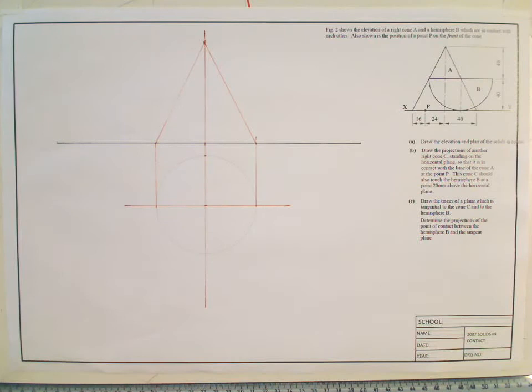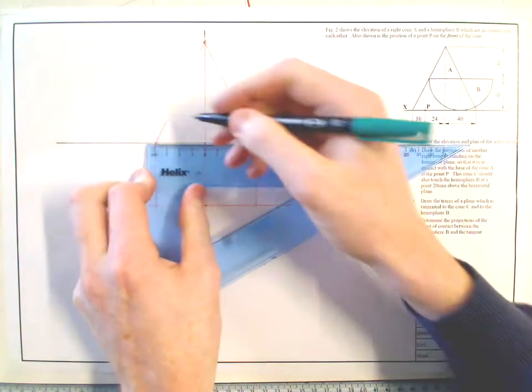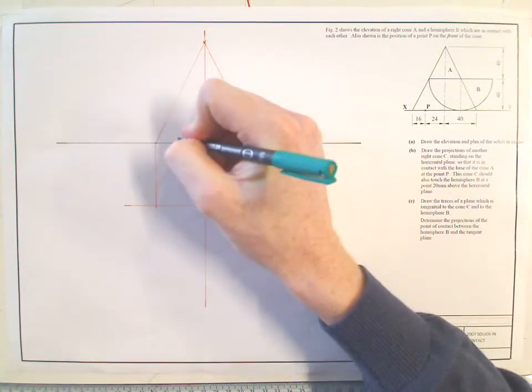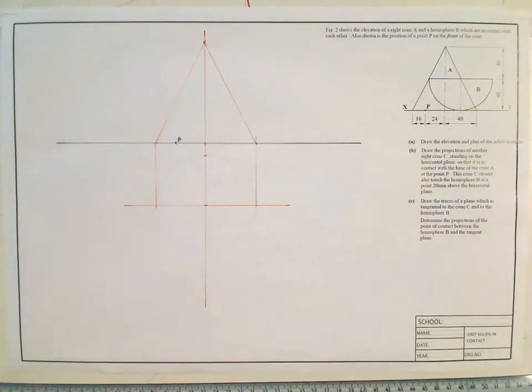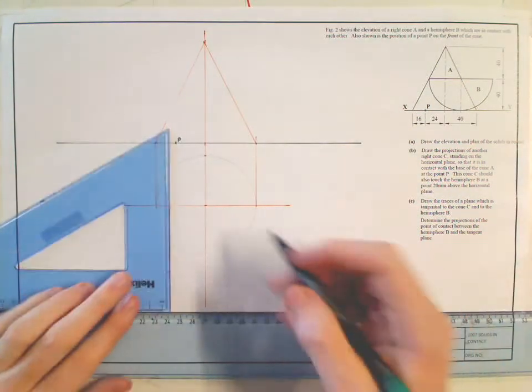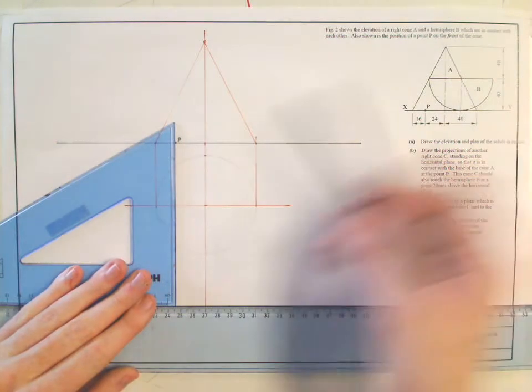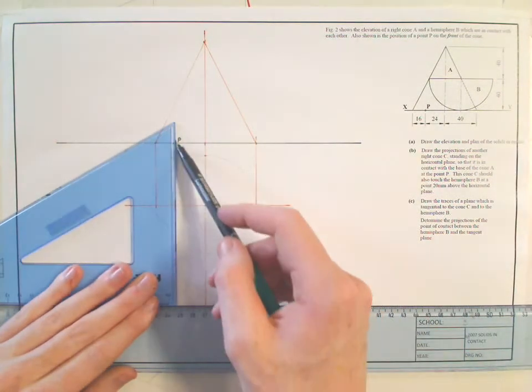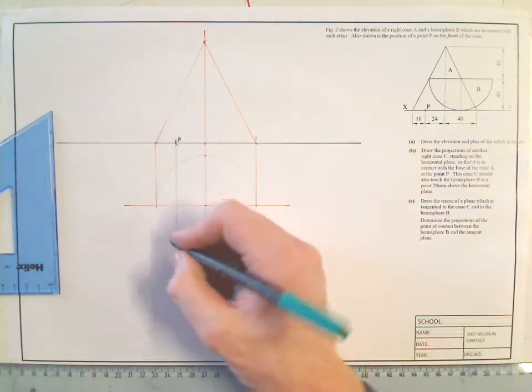That's the elevation of my cone. I'm also going to come in for point P. It's in 16mm. And I also know P is going to be on the edge of my cone. I'm also told it's on the front of the cone. So that there is point P.